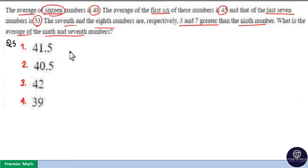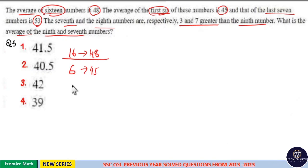Here average of 16 numbers is 48 and out of the 16, first 6 numbers average is equal to 45 and last 7 numbers average is equal to 53. Now 6 plus 7 is 13 but there are total 16 numbers. So remaining 3 numbers average not given.